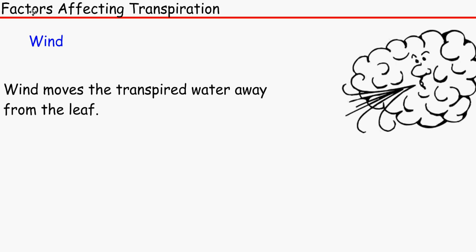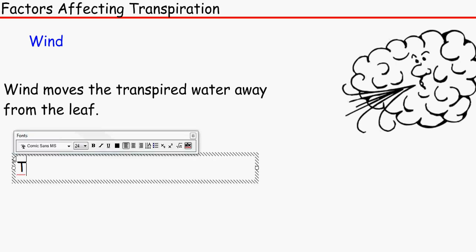So the wind moves the transpired water away from the leaf. So obviously the less the force of the wind, the less wind speed means less transpiration happens.